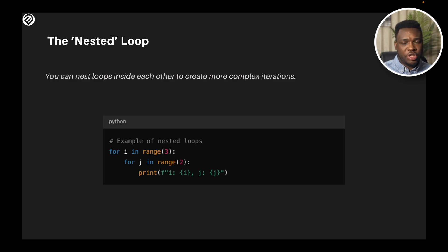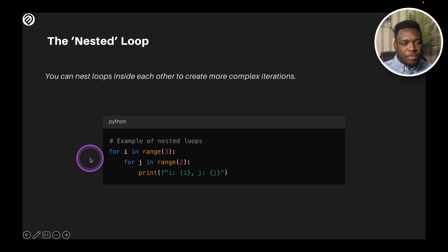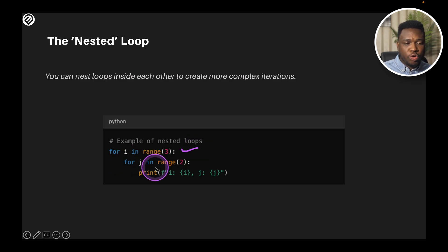We can also have nested loops, just like we have nested conditions. You can nest loops inside each other to create more complex iterations, because there are several use cases where a regular loop is not going to suffice but nested loops will. Here we have an example of nested loops: for i in range(3) — range of three means you're going to have zero to two. It starts here and comes into the next loop, for j in range(2), and you're going to print i.